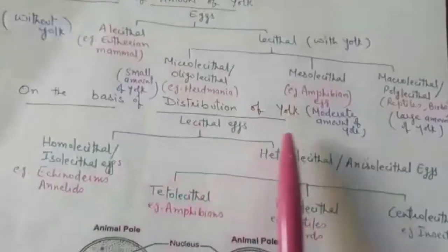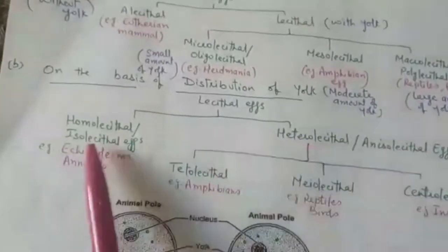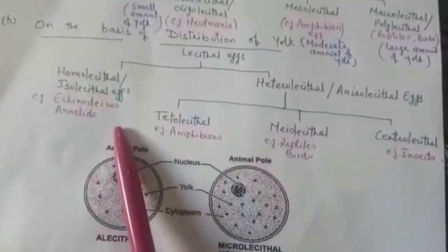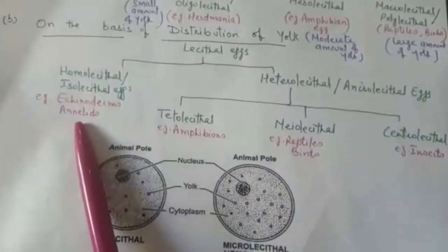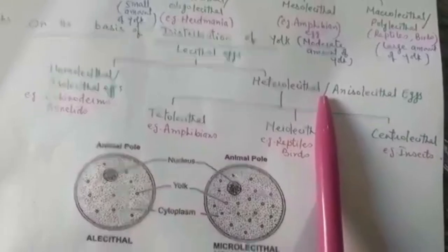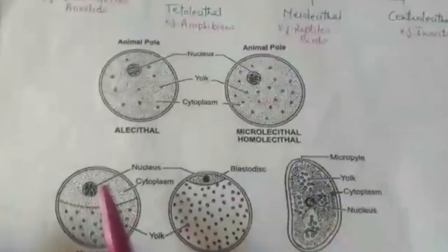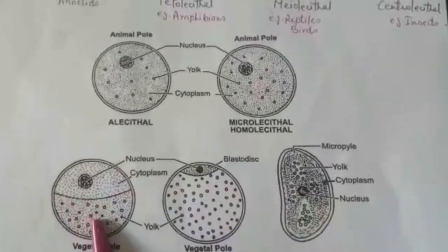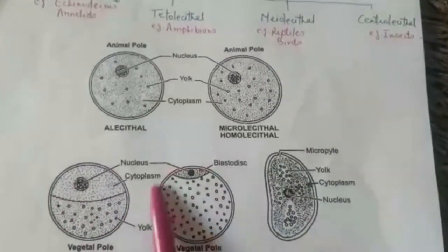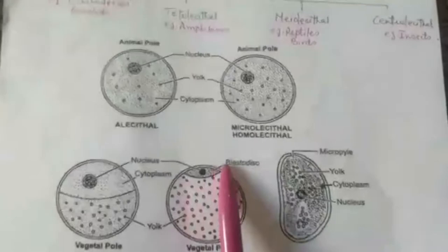The second classification is on the basis of distribution of yolk. Here we consider lecithal eggs, which are classified into two categories. Homolecithal or isolecithal eggs have yolk uniformly distributed throughout the ooplasm — example is echinoderms and annelids. Heterolecithal or anisolecithal eggs have yolk more concentrated at particular points. Heterolecithal eggs are of three types: telolecithal, in which yolk is more concentrated towards one pole as in amphibian eggs; and macrolecithal, in which the whole egg is filled with yolk leaving behind a small disc-like area of active cytoplasm.